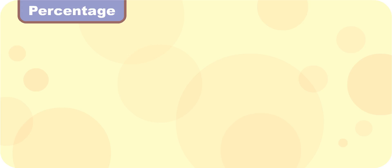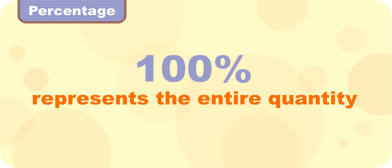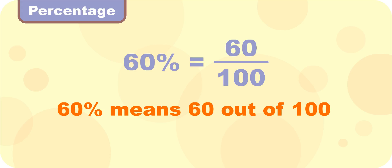What do you know about percentage, Turbo Girl? 100% represents the entire quantity. So 60% is 60 over 100. Correct. It means 60 out of 100.